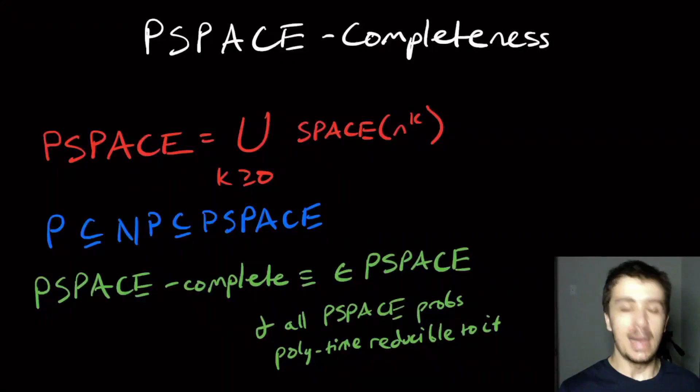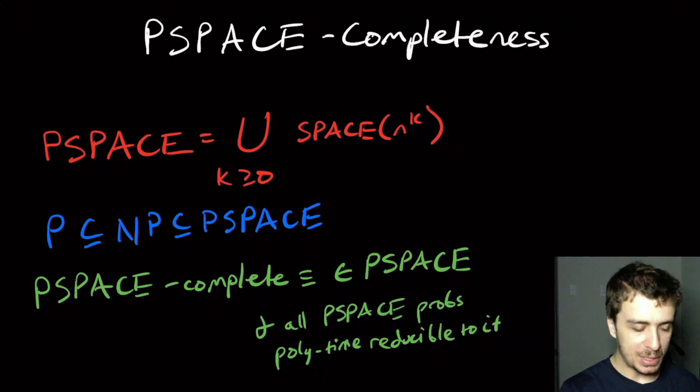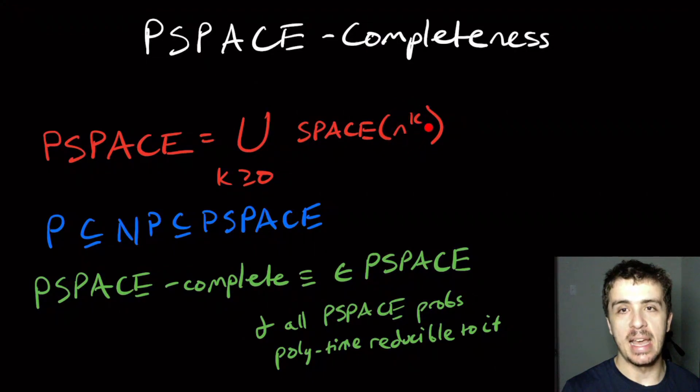Hi, so I want to talk about polynomial space completeness. What is polynomial space? It's defined to be the union over all integers k, or really any real number at least zero, of SPACE(n^k). So this is a polynomial in n, and we're taking the union over all k at least zero.